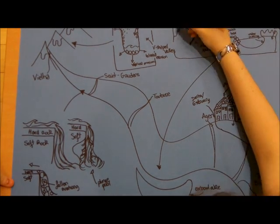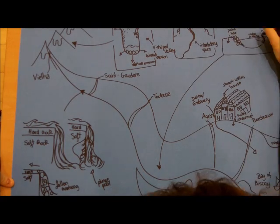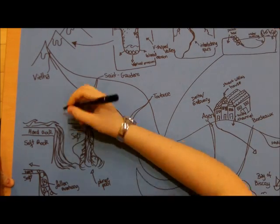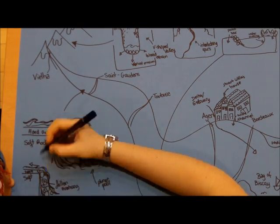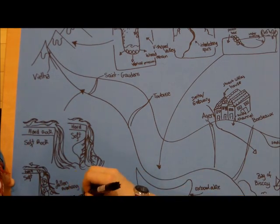A delta forms when the gradient of a river is greatly decreased near to the sea. Therefore, the river will deposit the majority of its load. If the rate of deposition is greater than the rate at which the sea moves the sediment, a delta will develop.